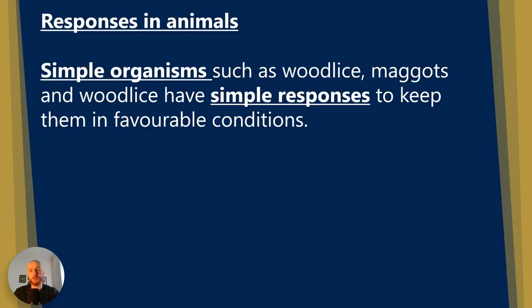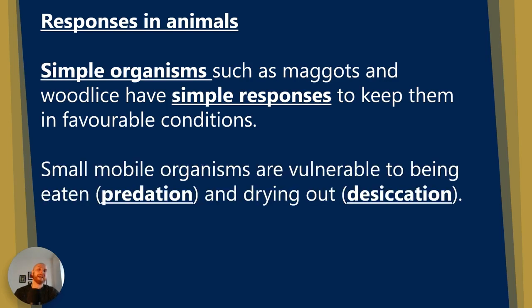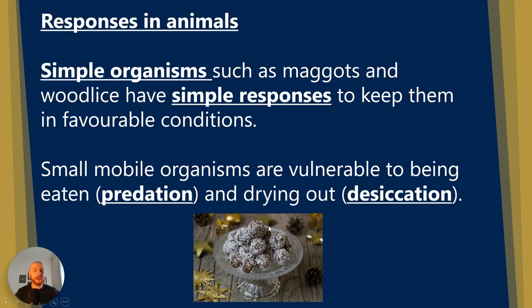We're going to be talking about responses in animals first of all. Simple organisms such as maggots and wood lice have simple responses to keep them in favourable conditions. Small mobile organisms — those that are able to move about freely — are vulnerable to being eaten, which we call predation, where one organism eats another. These small mobile organisms are also vulnerable to drying out, and the technical word for drying out is desiccation.